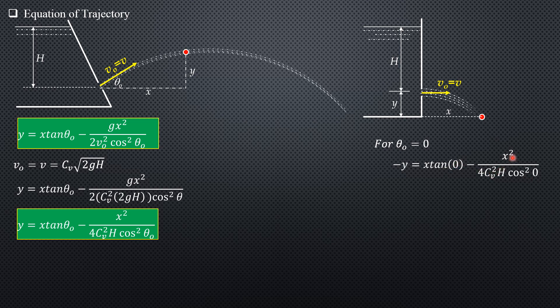...after we cross multiply, we have x² = 4C_v²Hy. This is the resulting equation of the trajectory when theta_o is zero.